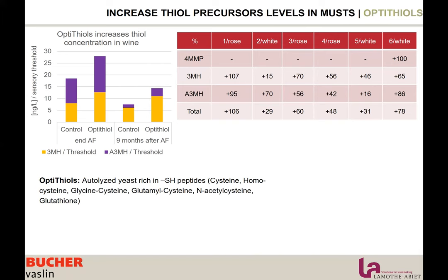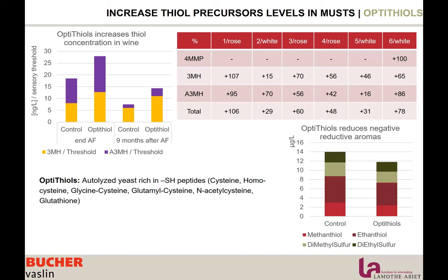The first question that usually comes up is: what about reduction? Some people are scared to increase reductive aromas as well. We did trials looking at all the negative reductive aromas produced during fermentation, and when we add Optitiol, we are actually reducing the amount of negative reductive aromas. The yeast is not stressed and not producing these off-aromas — instead, it is using all these sulfur peptides to produce thiols.